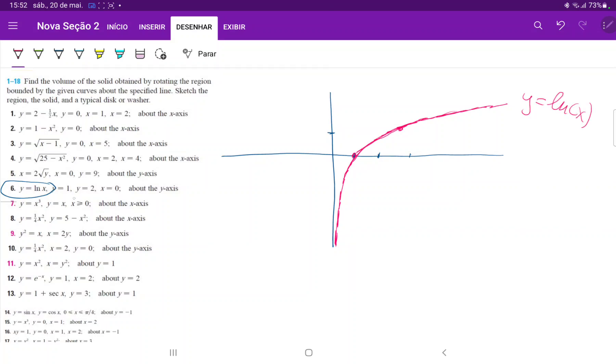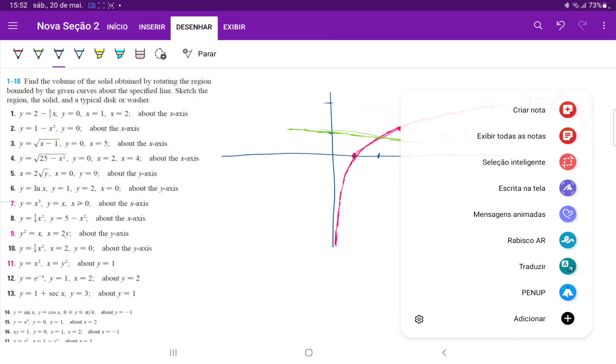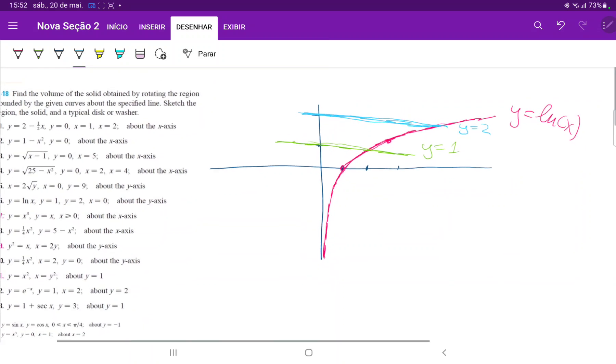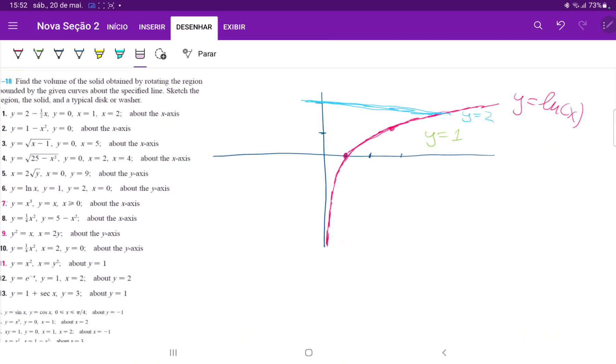And then what else do we have? We have the line y equals 1. So let us draw this. This is our y equals 1. And we have the curve where y equals 2. So at 2, we're gonna draw it in a different color. So we have over here, this is our y equals 2. I didn't draw this green line so straight, so maybe I should improve this.